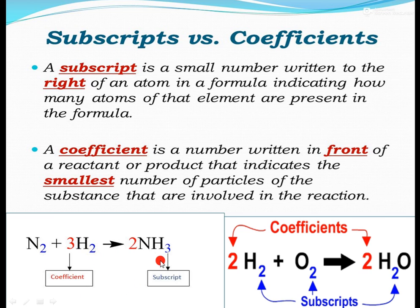When NH3 is written, the subscript with N is not written, which means it is 1. So in NH3, there is 1 atom of nitrogen and 3 atoms of hydrogen. The coefficient represents the number of molecules, or how many particles of that substance are reacting.